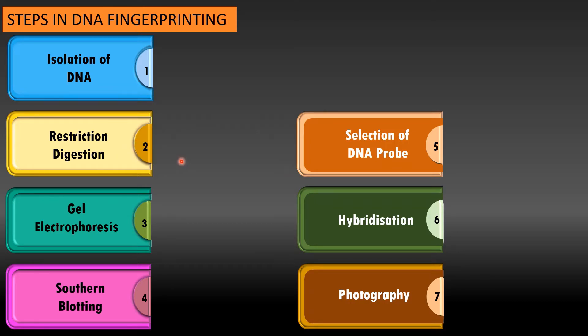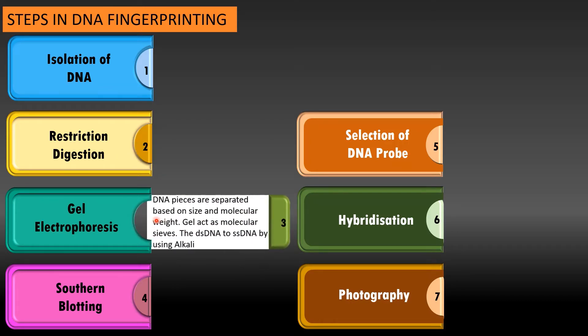Now those pieces are separated by using agarose gel electrophoresis. Agarose is a type of sugar which acts as a molecular sieve and here based on the length of the DNA, the DNA gets separated. At the end of this gel electrophoresis, double stranded DNA is converted to single strand DNA by using alkali treatment.